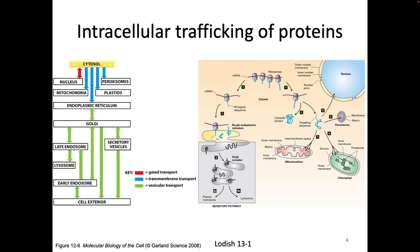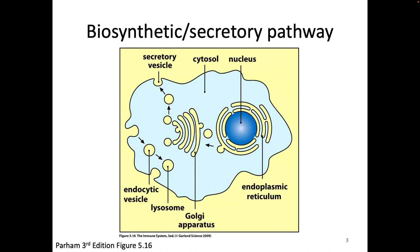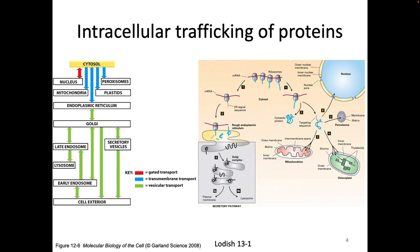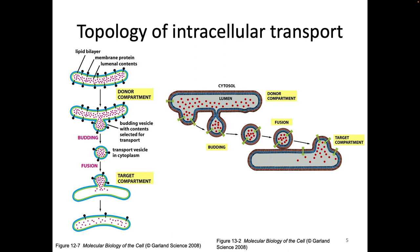Or if the protein came in through endocytosis or phagocytosis, then it's coming in through these vesicles as well. This is also true of transmembrane proteins. If a protein is going to be a transmembrane protein in any membrane of the cell, it has to be put into the membrane, and that is also done co-translationally. It takes some energy to get the protein stuck in the membrane.